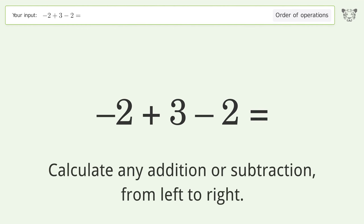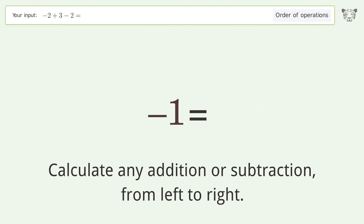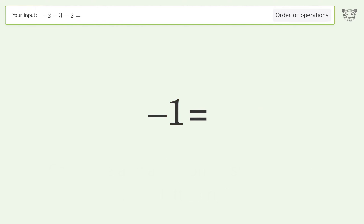Calculate any addition or subtraction from left to right: negative two plus three equals one, one minus two equals negative one. And so the final result is negative one.